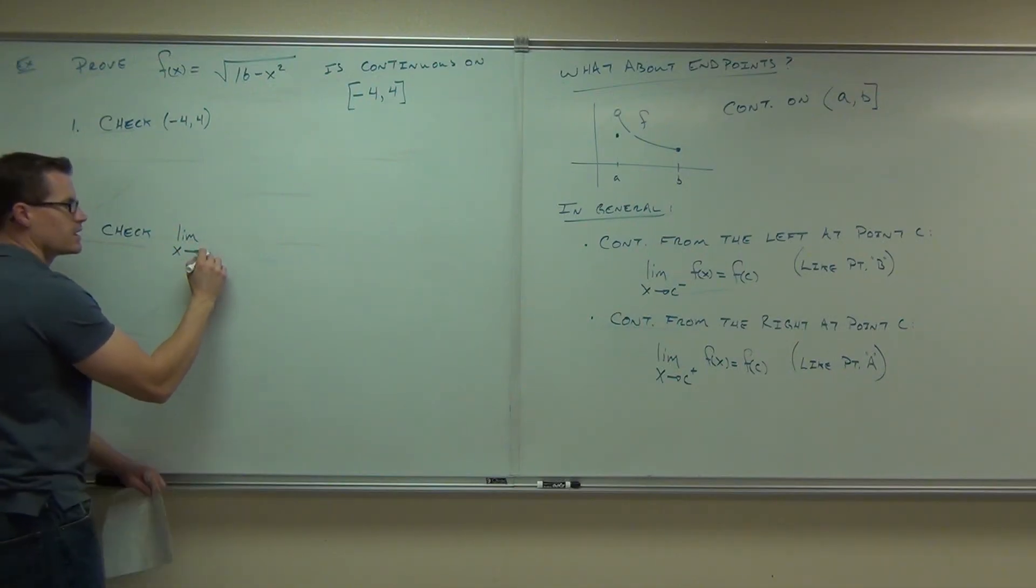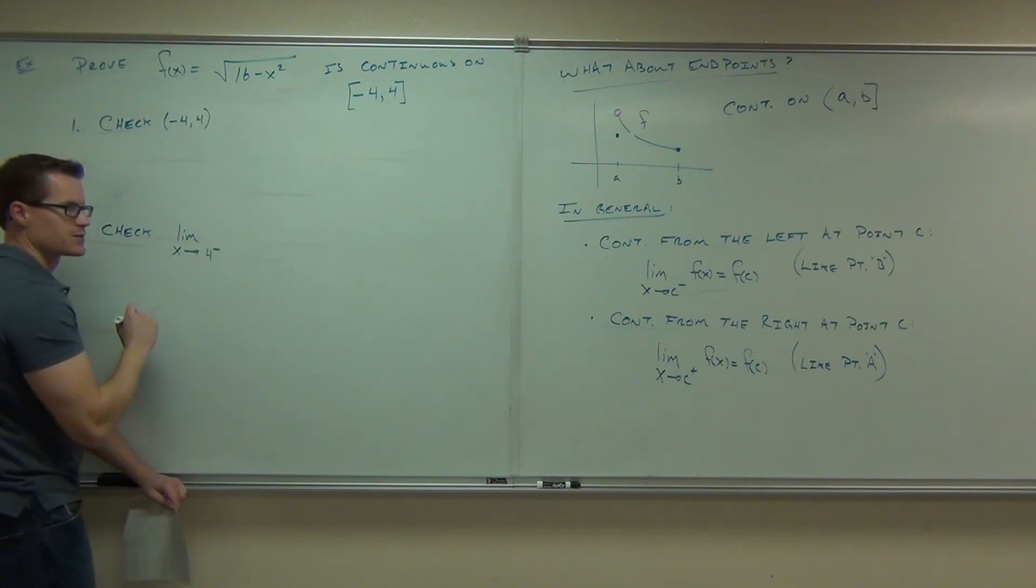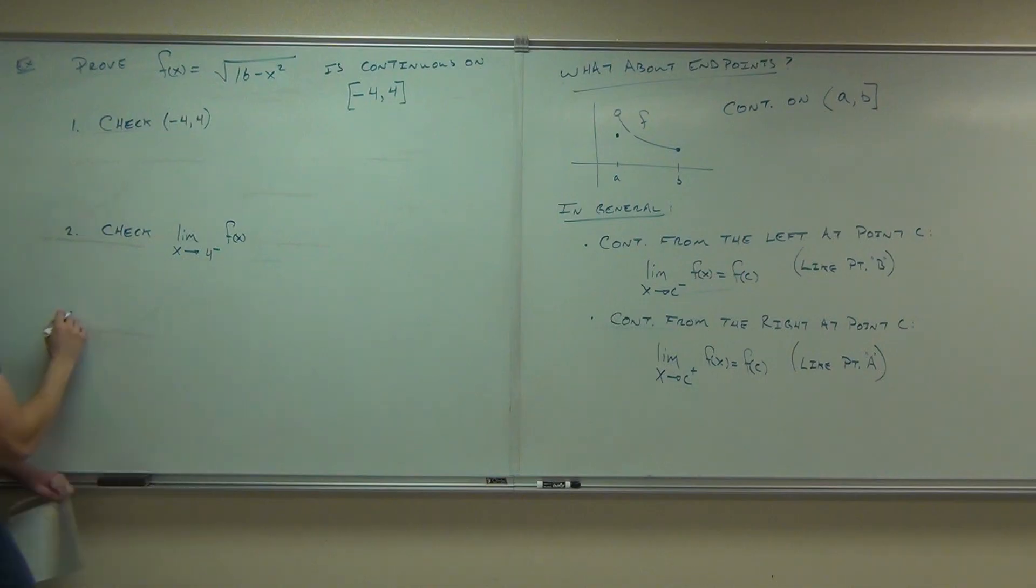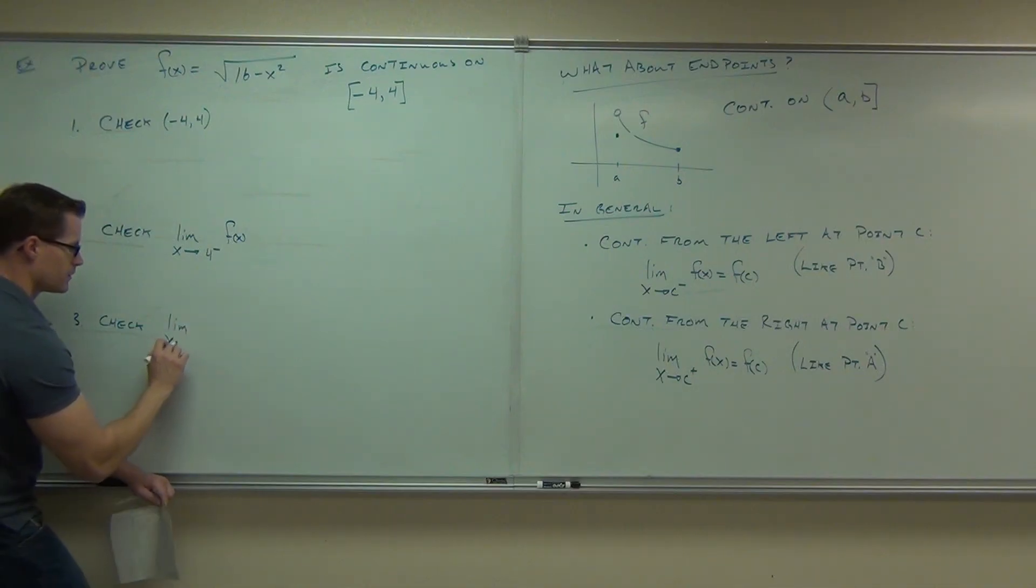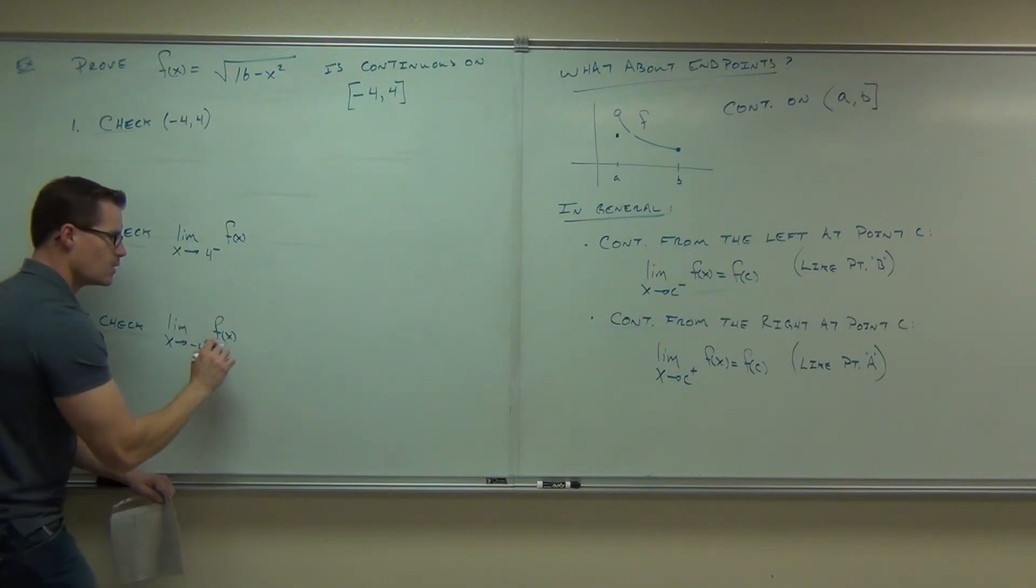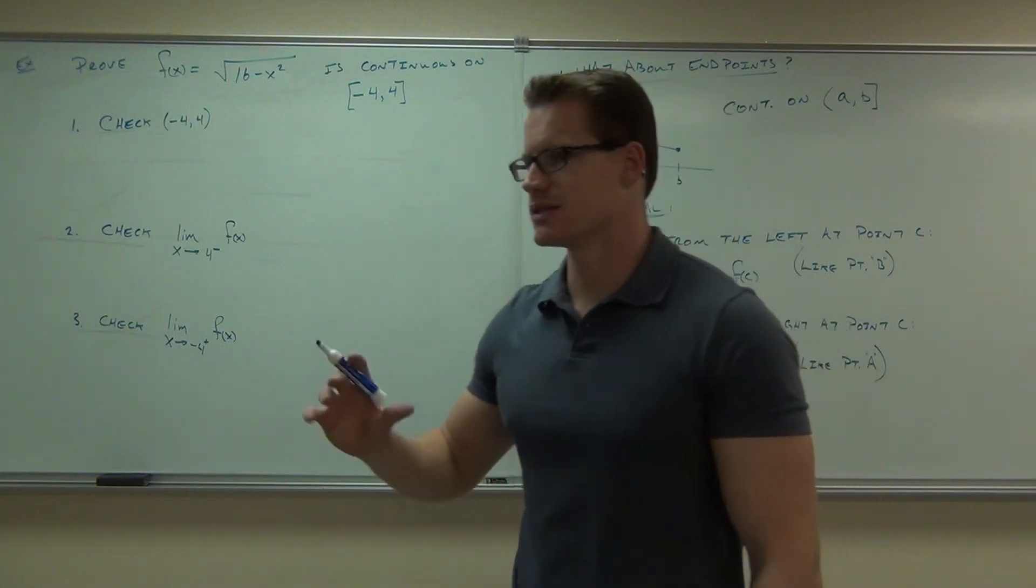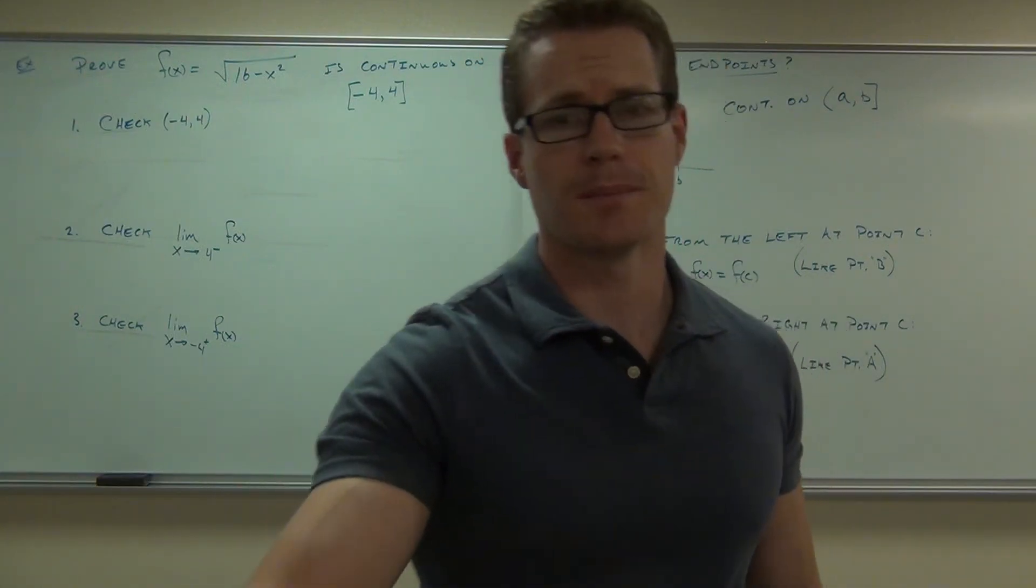So, the right endpoint would be positive four from the left. The left endpoint would be negative four from the right. So, you're going from the right on that. We'll figure out how to do this next time. I'll show you each little piece of this, and we'll determine that it is, in fact, continuous from negative four to four inclusively. We'll see you next time.